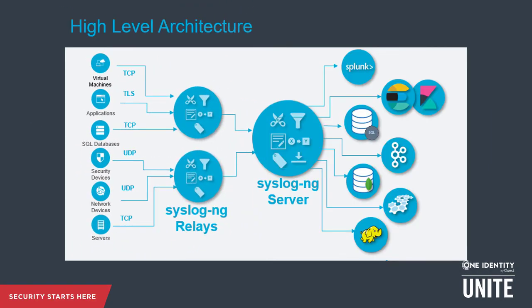Now let's look at an example of a high-level architecture to give you an idea of what this looks like in your environment. Over here on the left you can see different data sources — all generating logs and sending ultimately to downstream destinations. Maybe you only have a couple of destinations, such as your SIEM and maybe some Kafka destinations for development, or some databases. All of these sources, whether they're virtual machines, databases, security devices, network devices, or servers — Windows or Linux — need to send logs in a fast and readable format. By inserting a log management layer here, which SyslogNG is, you can optimize the amount of data going to your SIEM and feed your other destinations in real time as well.